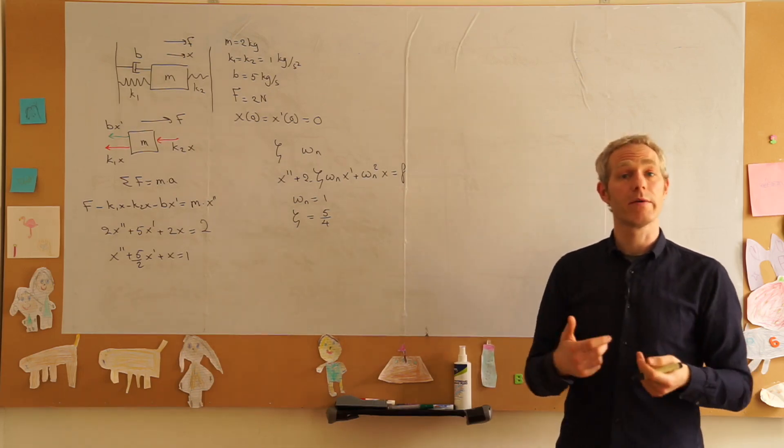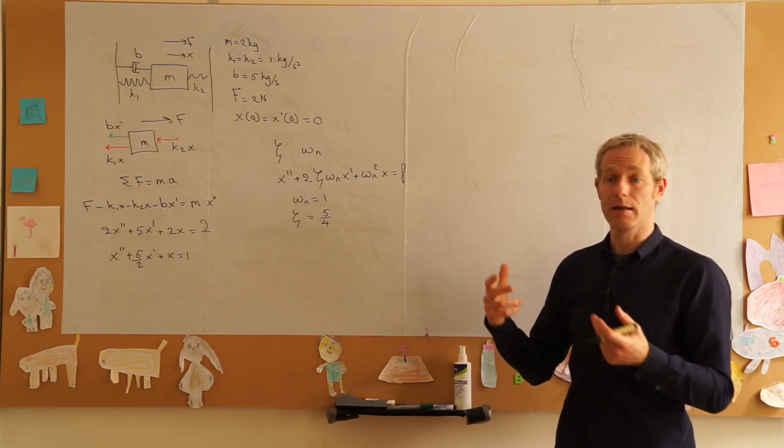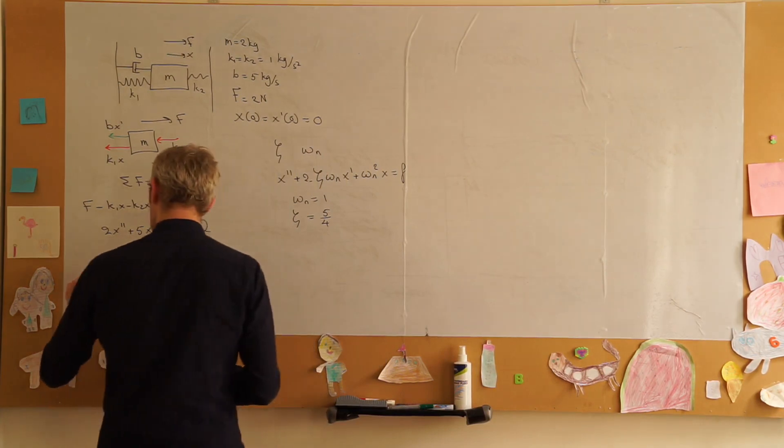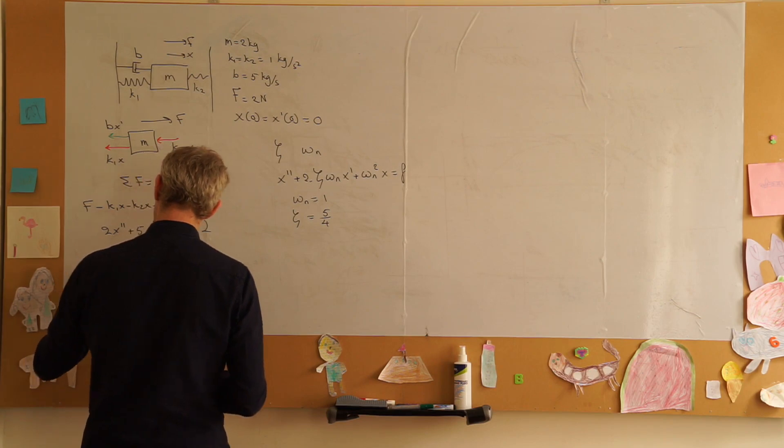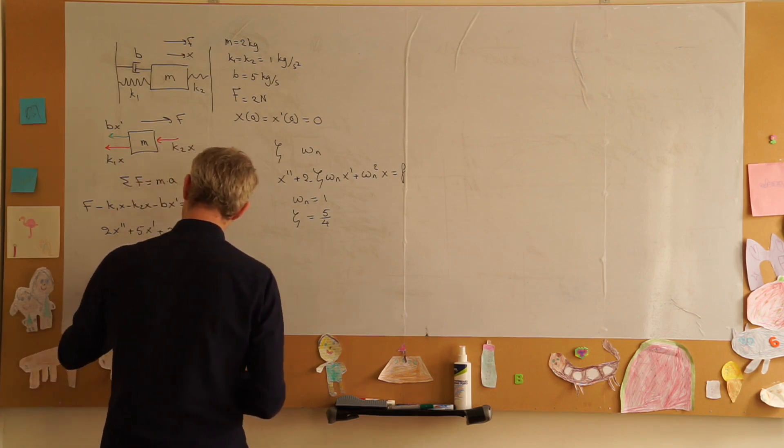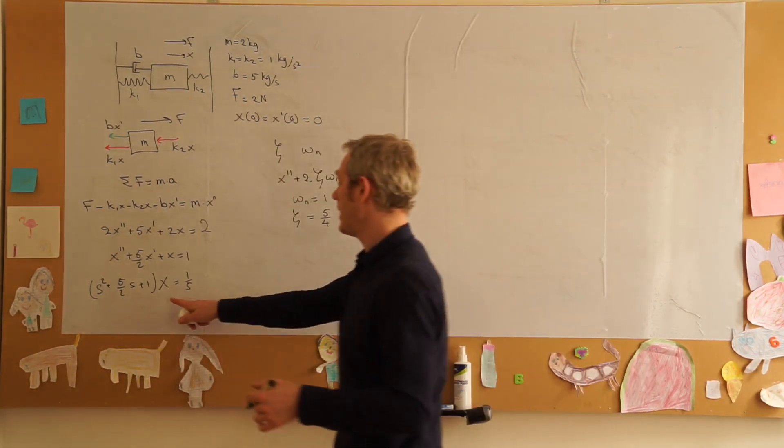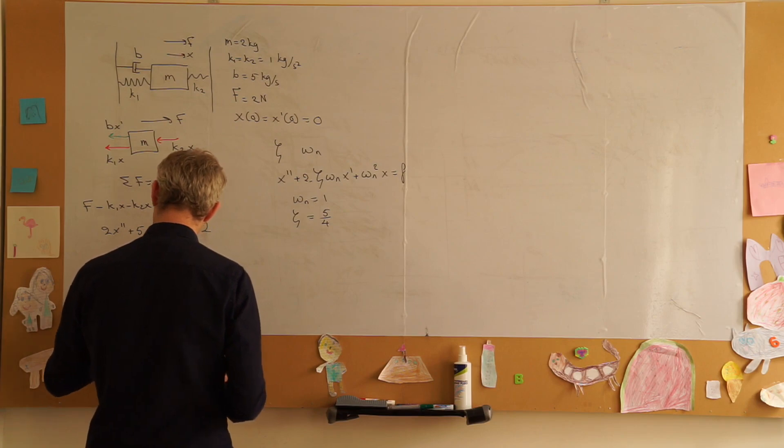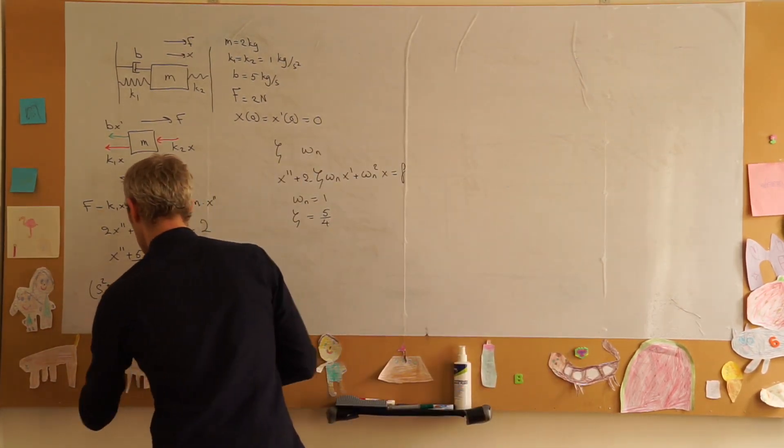We know the properties of our system now. We want to solve this system by taking the Laplace transform, solving x in the Laplace domain, then taking the inverse Laplace transform. We get s squared plus 5 over 2 s plus 1 times x is equal to 1 over s. We want to isolate x and we find x is equal to 1 over s times s squared plus 5 over 2 s plus 1.